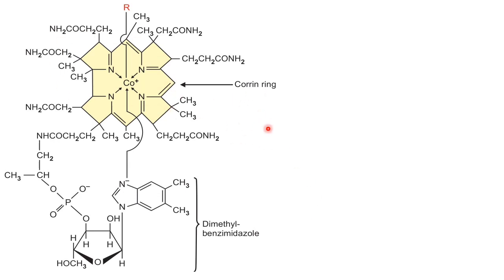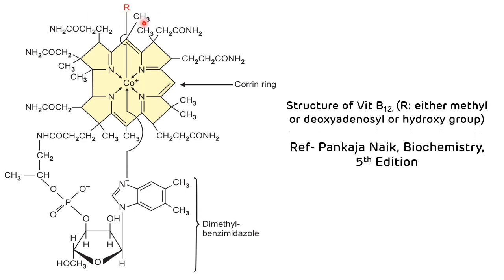The structure of the corrin ring is similar to that of the porphyrin ring. Four pyrrole rings coordinated with a cobalt atom form the corrin ring, and this cobalt atom is bound to the nitrogen atoms of the four pyrrole groups. The fifth valency of the cobalt is satisfied by the nitrogen of the dimethyl benzimidazole ring, and the sixth valency is satisfied by the R group, which can be either methyl, deoxyadenosyl, or hydroxyl group.